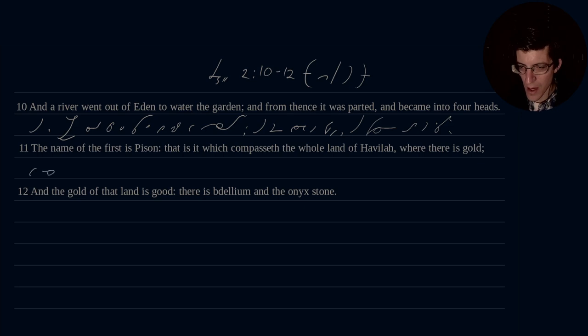The name of the first is Pison. That is it which compasseth the whole land of Havilah, where there is gold.